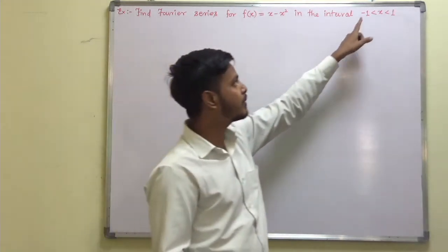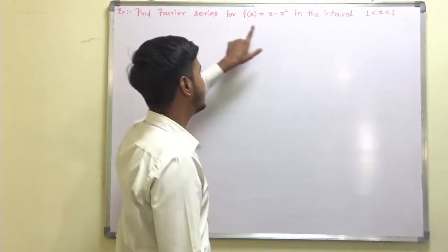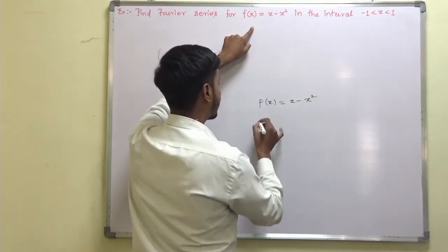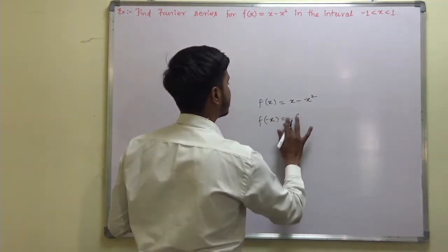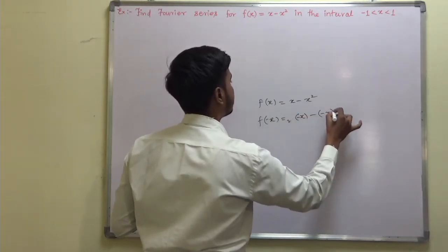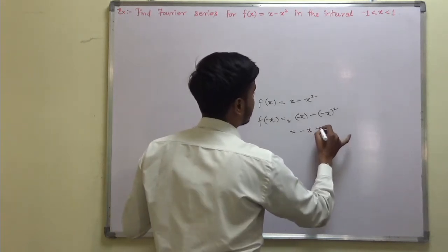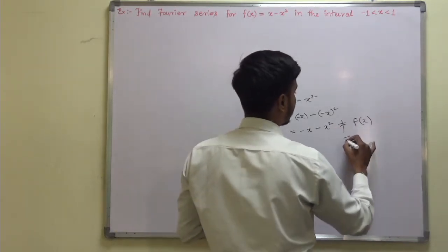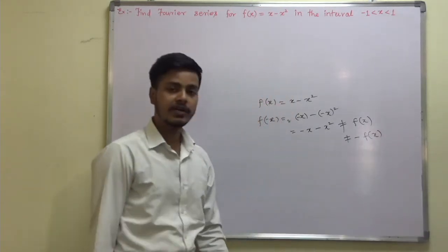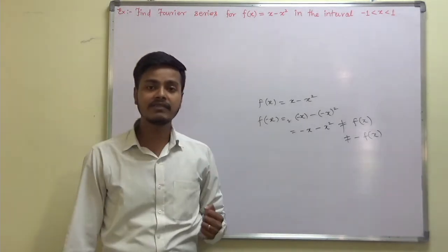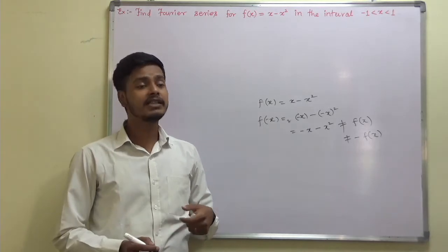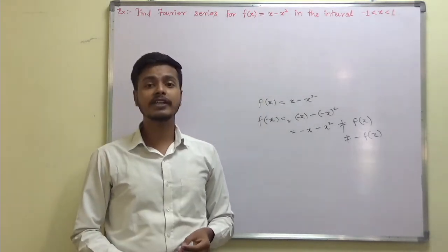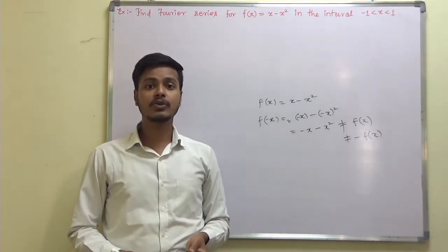Whenever you have the interval −a to a — here a = 1 — check whether the function is even or odd. My function f(x) = x − x². When I replace x by −x, I get −x − x², which is not equal to f(x) and not equal to −f(x). So this function is neither even nor odd. Therefore, to find the Fourier series you have to find not only a₀ and aₙ but bₙ also.